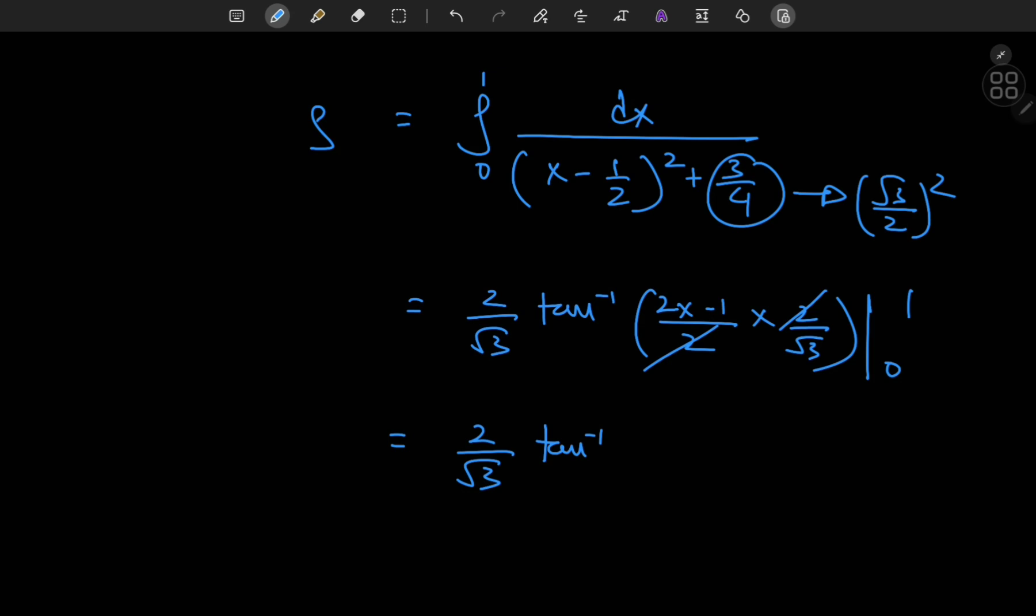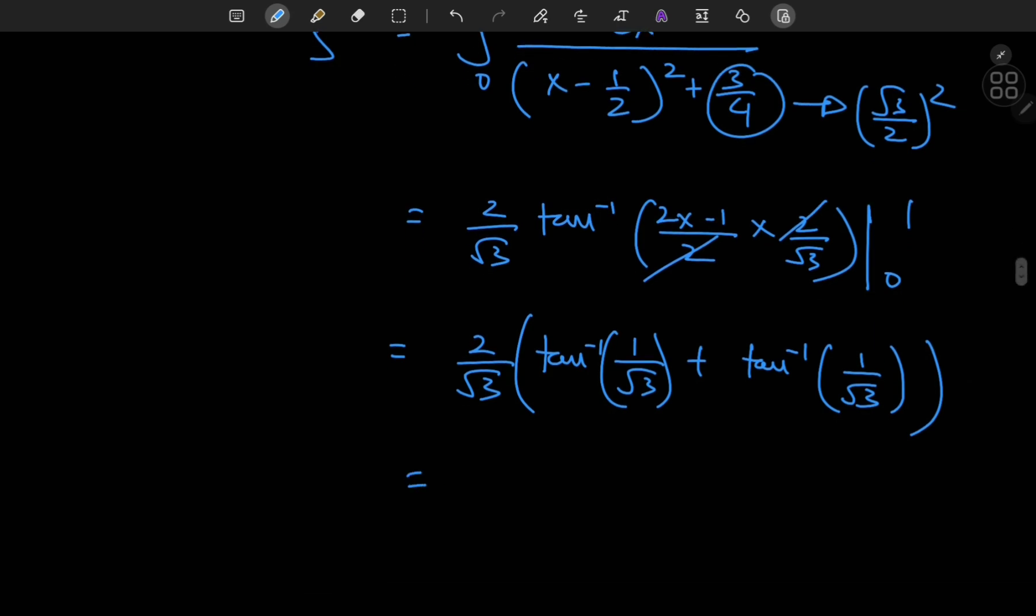As x approaches 1, we have 2x minus 1 approaching 1. So we have 1 by root 3 minus inverse tangent. As x approaches 0, we're just left with negative 1 by root 3. But the inverse tangent function is an odd function anyway, so we can pop out that negative sign, and that cancels the one outside.